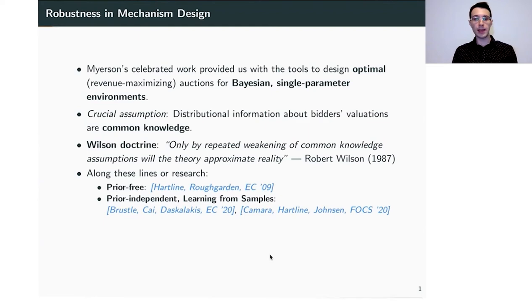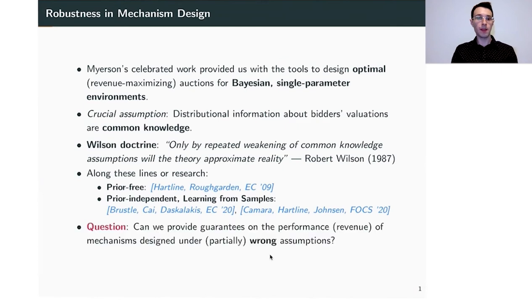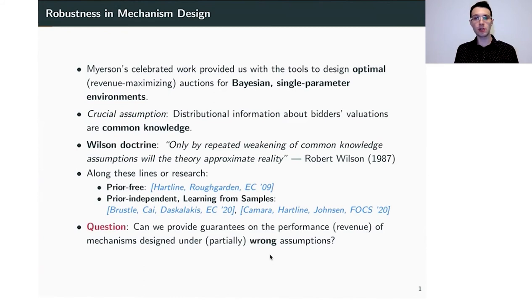In the latter case, we assume there is a prior, but we do not know it — we're learning it from samples. In this work, we concern ourselves with the question of what if we have designed an auction under the wrong distributional assumptions. Can we still get some meaningful guarantees on its performance?